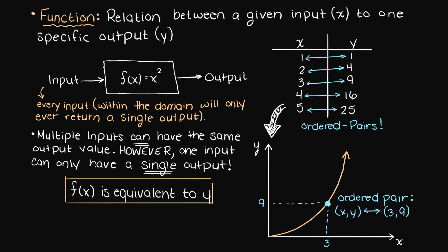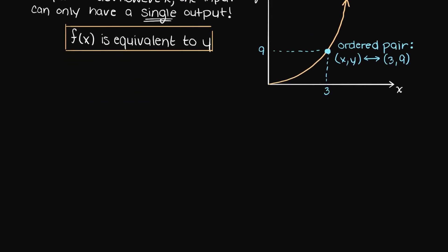So, in summary, just remember that a function is essentially the relation between an input to a single output. If your input, remember that is your x value, gives you more than one possible y value, then you no longer have a function.